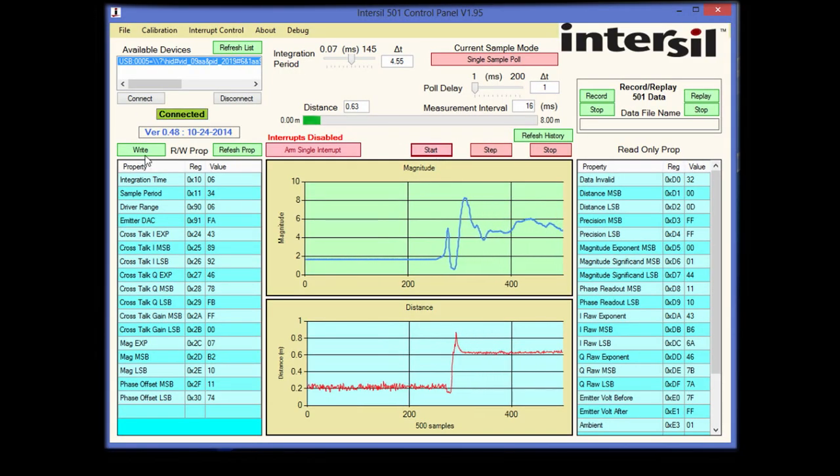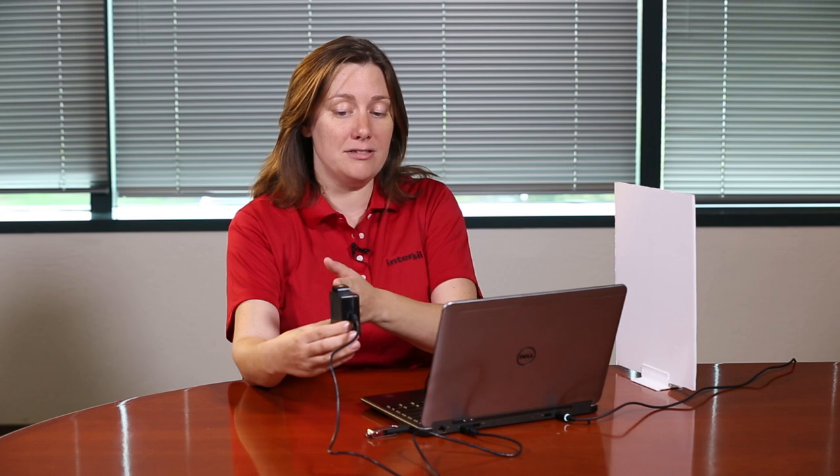A first example of application is to point the board towards the target. You can see two signals on the GUI, the magnitude and the distance in meters. Here I am measuring the distance between the board and the target.